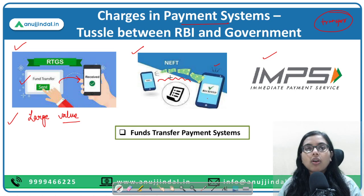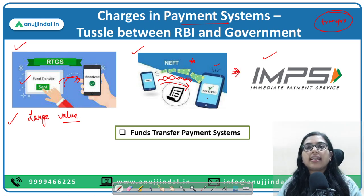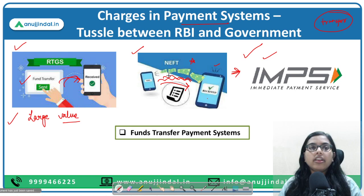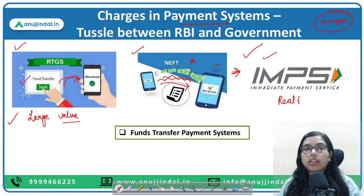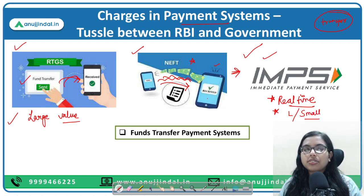To remove the time delay that existed with NEFT, NPCI came up with IMPS — Immediate Payment Service. IMPS combines the features of both: first, real-time settlement happens immediately, and second, you can transfer both large value and small value transactions through IMPS. So this completes our funds transfer payment system.